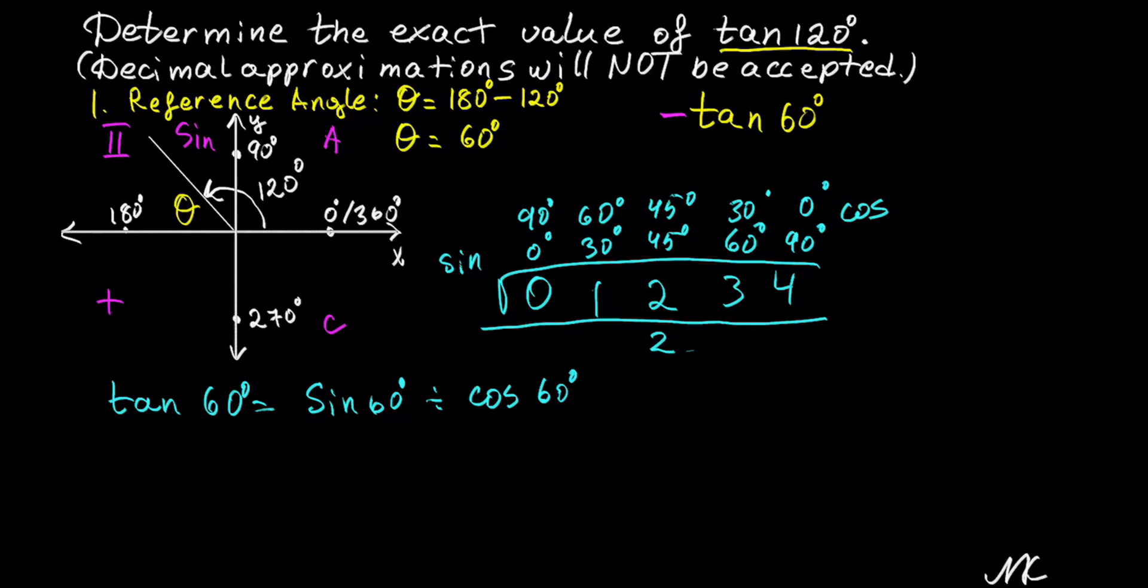The reference for sine of 60 degrees is radical 3, so sine of 60 degrees is radical 3 out of 2. The reference for cosine of 60 degrees is radical 1 out of 2.